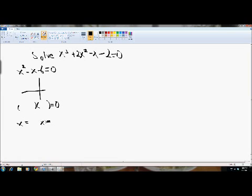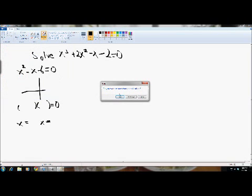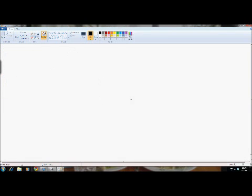But this one is a bit different, alright? So how are we going to do it? Well, I'm going to show you. Let's start with the equation: the cubic equation is x cubed plus 2x squared minus x minus 2 equals 0.